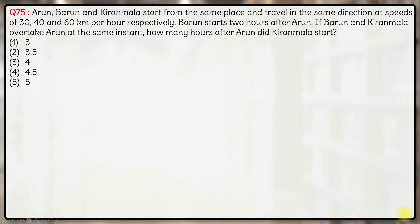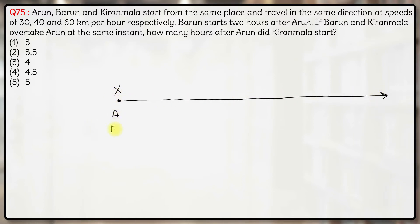We have a very interesting question: Arun, Barun, and Kiranmala start from the same place and travel in the same direction. Let's say all of them start from this place x and they all move in this direction. They travel at speeds of 30, 40, and 60 km per hour respectively. Barun starts 2 hours after Arun.